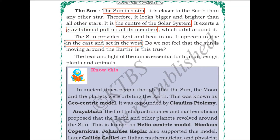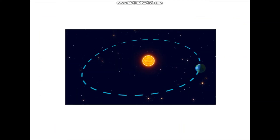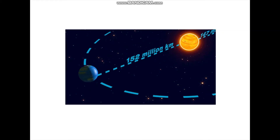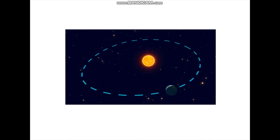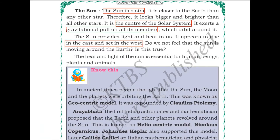Do you feel that the Sun is moving around the Earth? When we look at the sky, it feels as though the Sun is moving from east to west. But the Sun is not moving around the Earth — instead, the Earth is moving around the Sun. As we saw in the image, the Earth revolves around the Sun, which is at the center. The heat and light of the Sun is essential for human beings, plants, and animals.